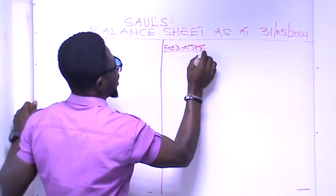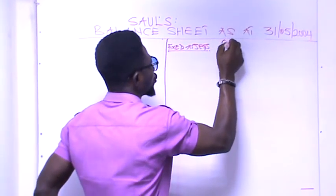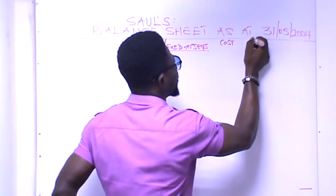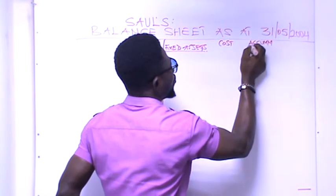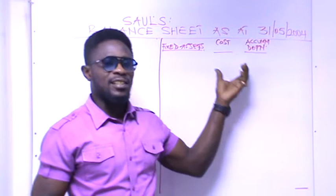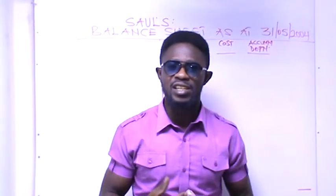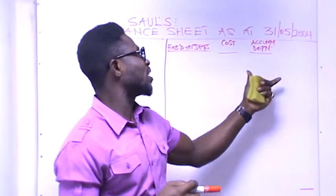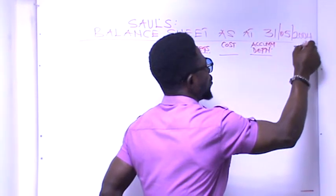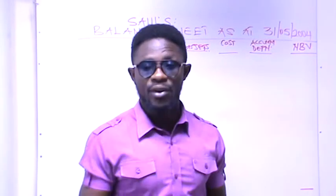Fixed assets — we underline that neatly. When we look at the assets, we have the cost of the assets. Then, because all assets depreciate, we look at the accumulated depreciation. When you have the cost of the assets and you take away the accumulated depreciation — which is the sum of the provision for depreciation spread over the years — you are left with the net book value or the written-down value of the assets.